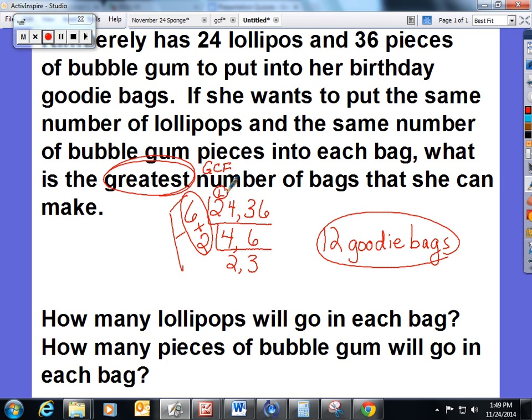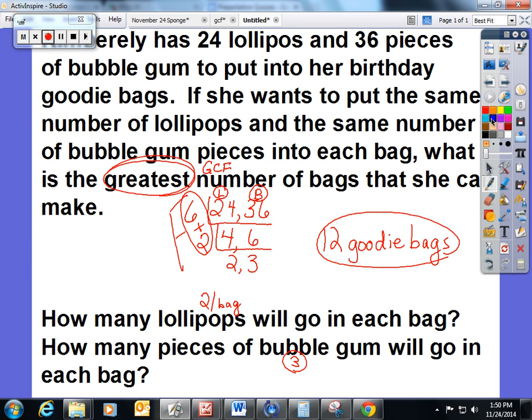There are two ways you can do this. If you have 24 lollipops divided by 12 goodie bags, there are going to be 2 lollipops per bag. If you take 36 and divide it by 12 goodie bags, there are going to be 3 bubblegum pieces in every bag.